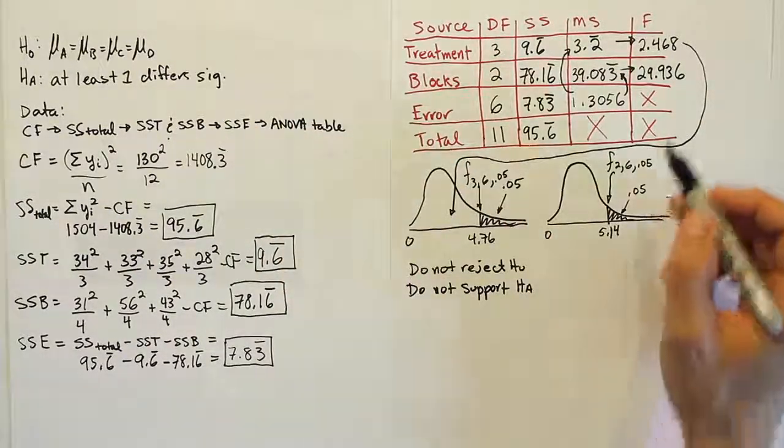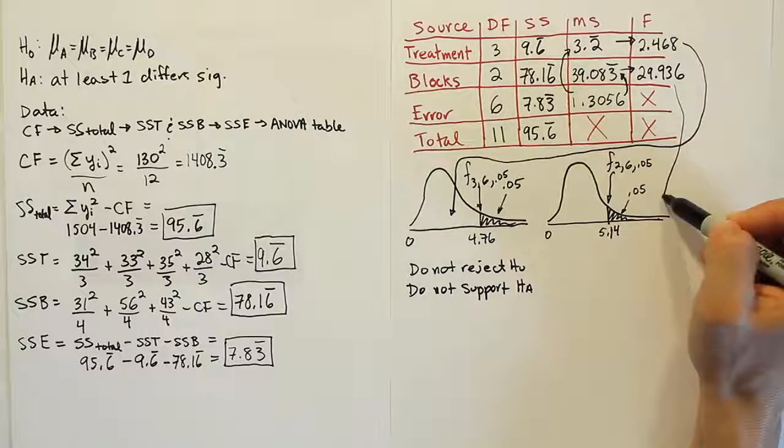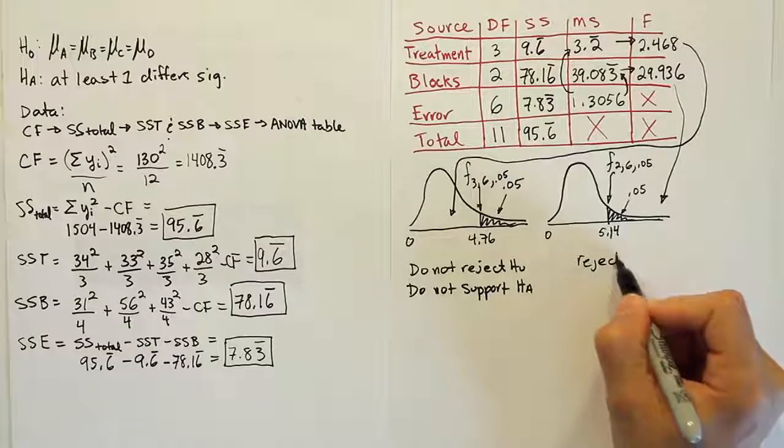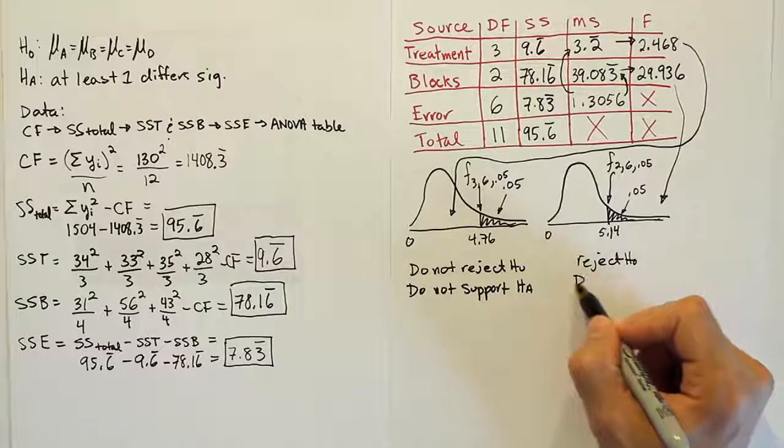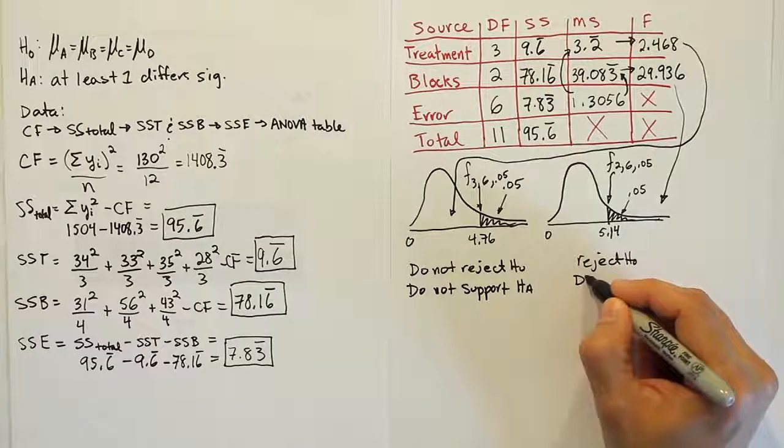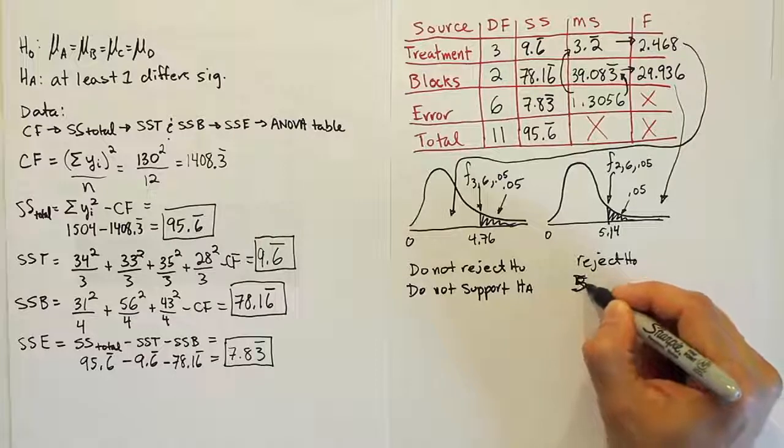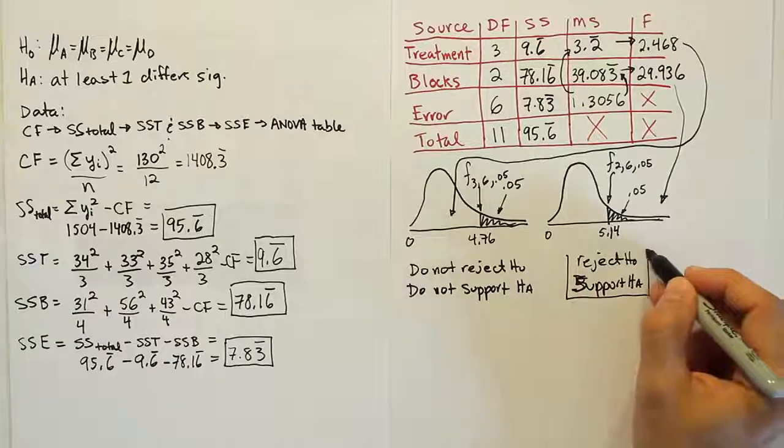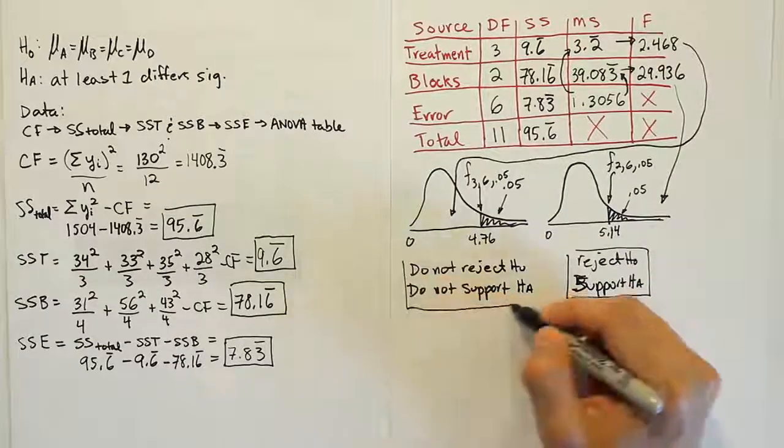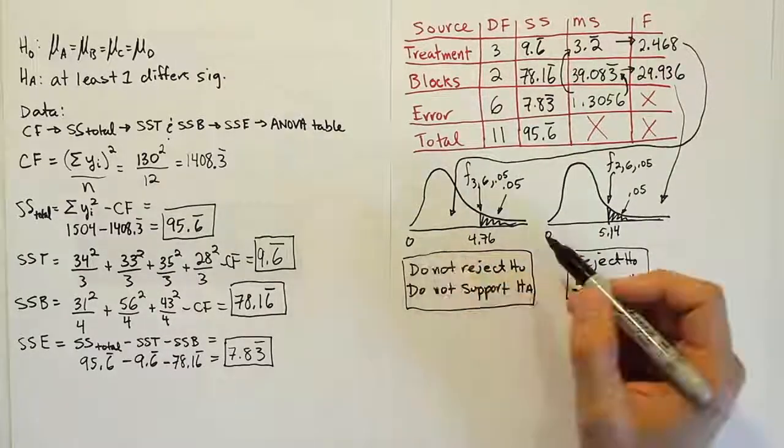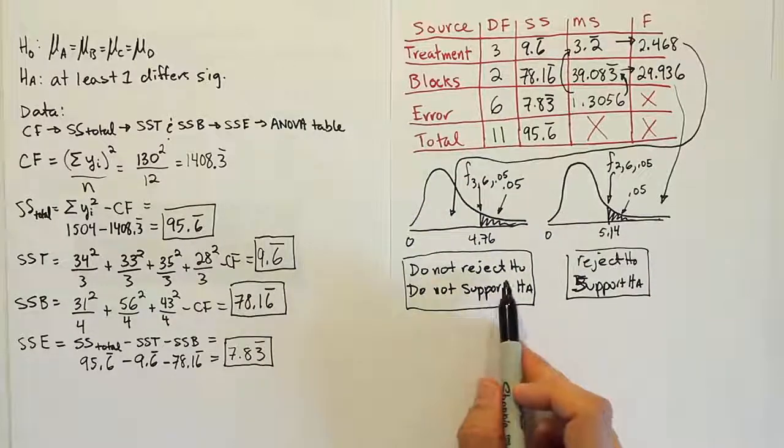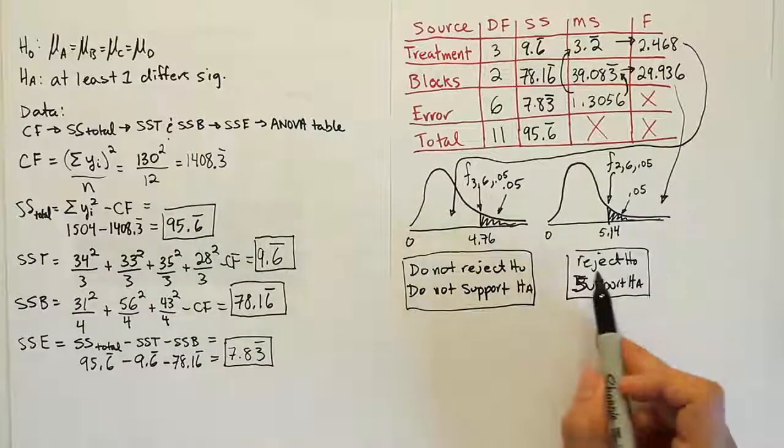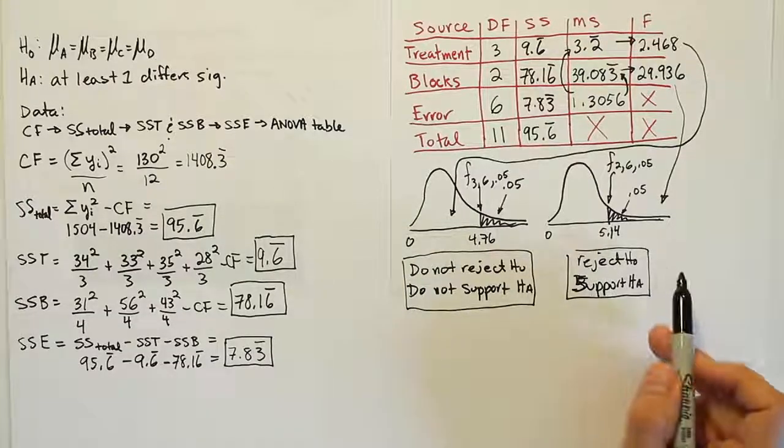Now, for the blocks, we actually have a different conclusion. This value lands way over here, so we conclude then, reject H0, support HA. So, essentially, what we have here is two different results. And if we want to think about this, we say that because we didn't reject here, we're saying the treatments are not significant. Because we did reject here, the blocks are significant.